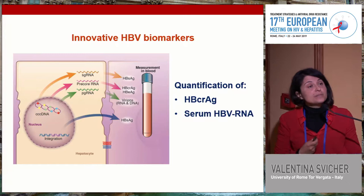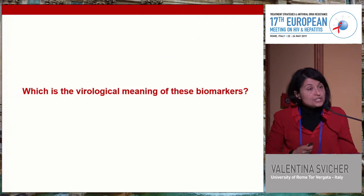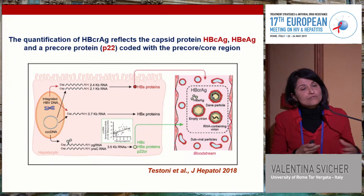Beyond optimization, the scientific community is also investigating two novel, innovative biomarkers: core-related antigen and serum HBV RNA. What is the virological meaning of these biomarkers? Core-related antigen reflects the production of three different proteins produced by the same viral gene.